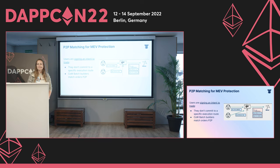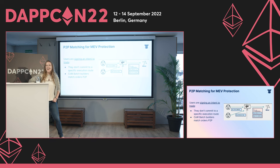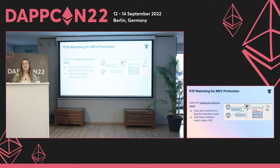Q&A on latency: batching transactions causes some latency. Currently CoW Protocol waits up to 30 seconds before including an order in the next batch competition. However, this is completely flexible — once there are more orders, the time will be reduced, probably down to 12 seconds, equivalent to the block time in proof-of-stake.